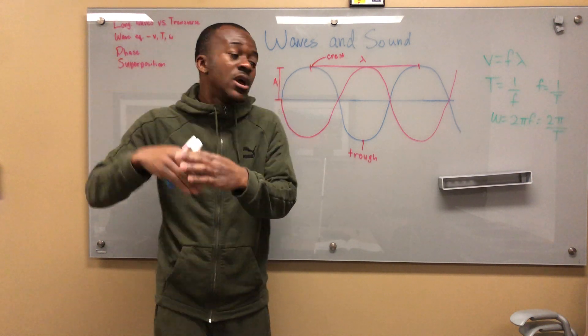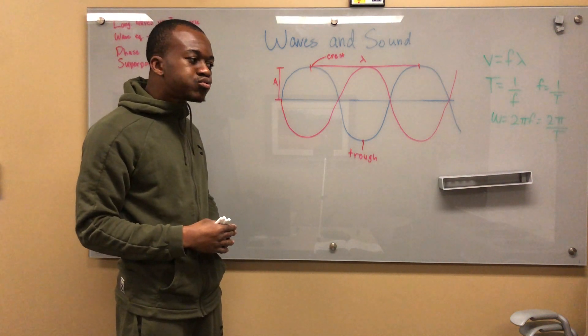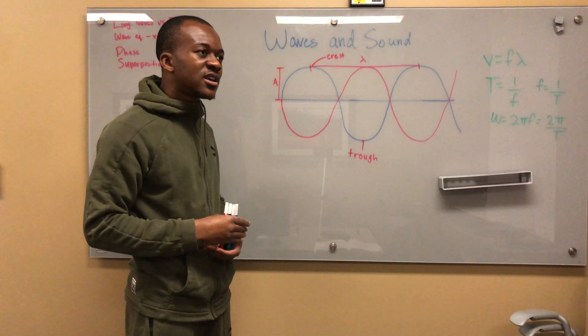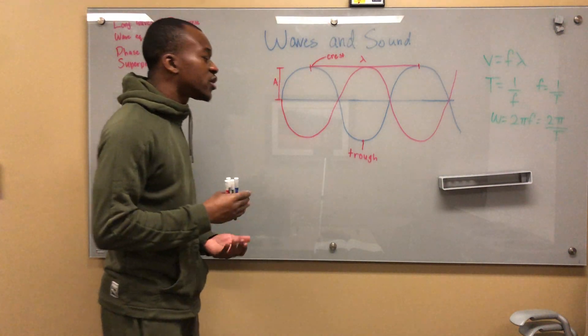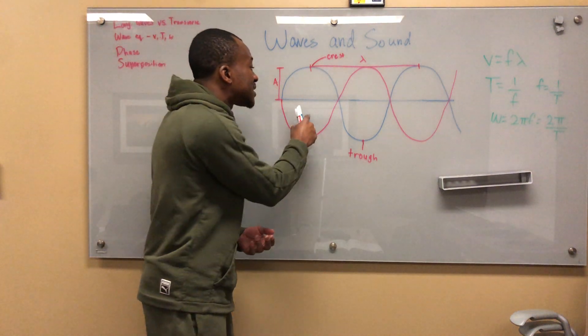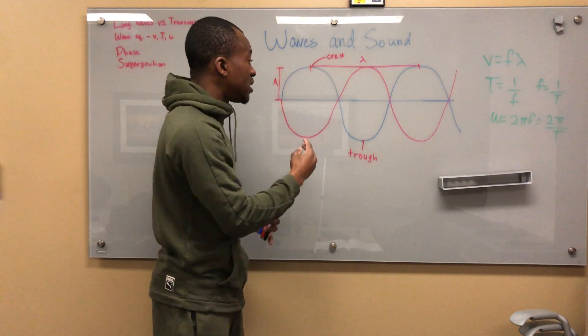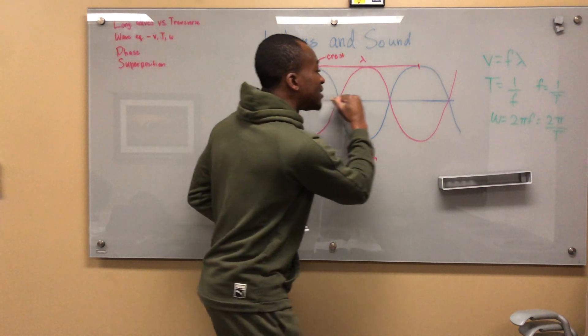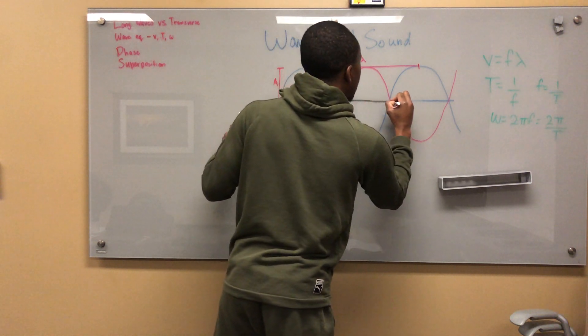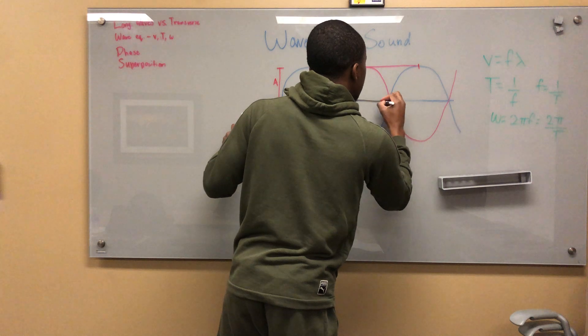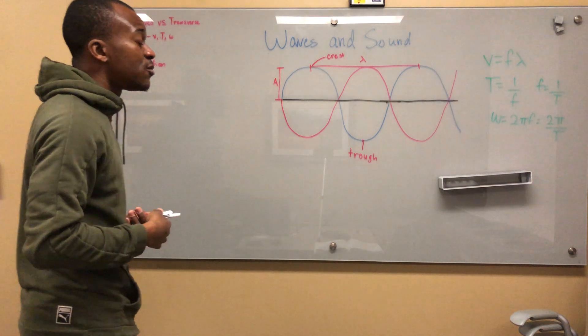They produce opposite waves so that it can level out to zero. There's something called constructive and destructive interference. This is destructive interference because this wave is negative and this is positive. When you add them up, they level out to zero, so the resultant might be something like this on the neutral axis.